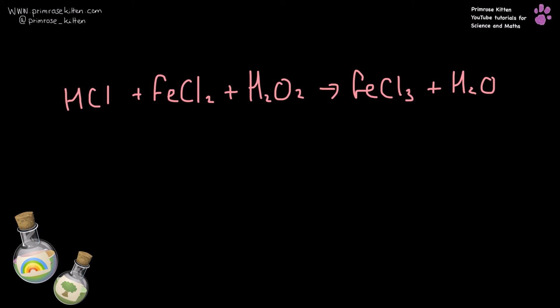Hydrogens, left hand side, three. Right hand side, two. So I'm going to put a two in front of there. That increases the amount of chlorines. That increases the amount of chlorine that I have. So I am going to put a two in front of there, and I'm going to put a two in front of there, because I increased my amount of irons.